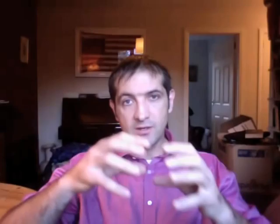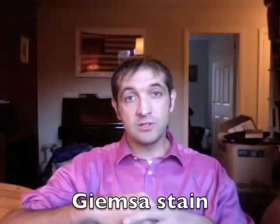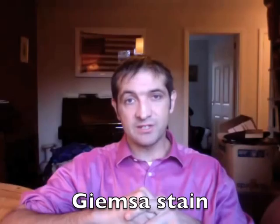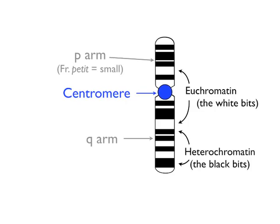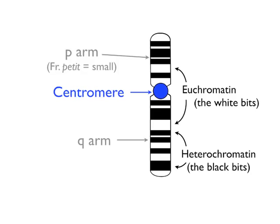Finer structure was revealed by cytologists who used various stains, in particular the Giemsa stain, which produced regular dark and light bands along the length of a chromosome. The light bands were called euchromatin and the dark bands called heterochromatin.